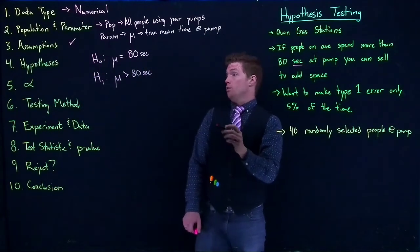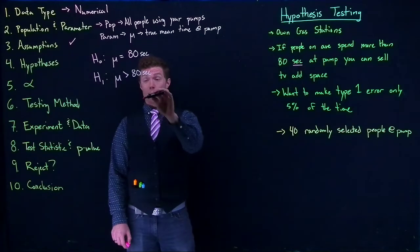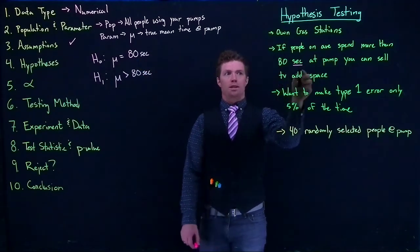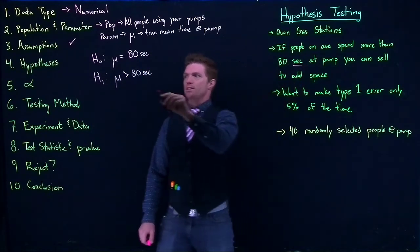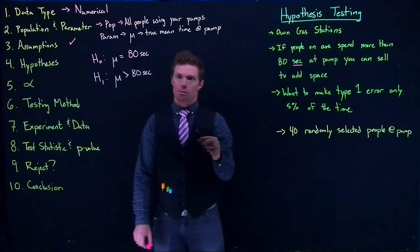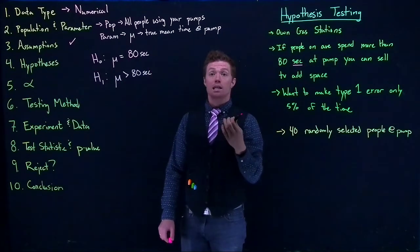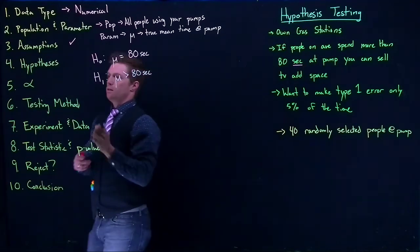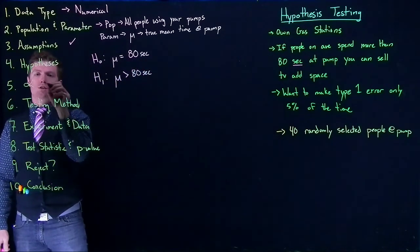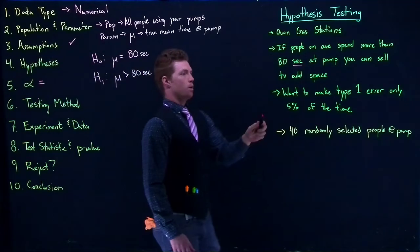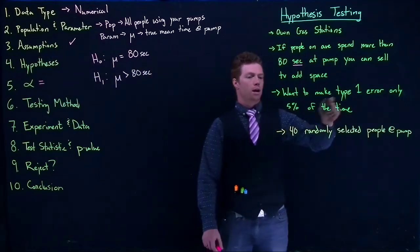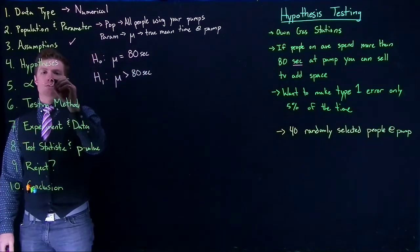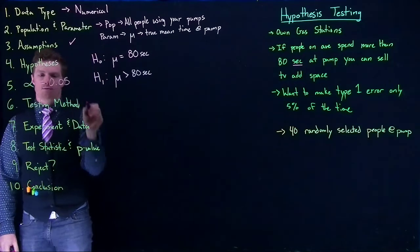Remember, the alternative is whatever we want to be able to claim. If we want to claim it's greater than 80 seconds, the null hypothesis is just that it's equal to 80 seconds. Our alpha was given in the problem — we want to make a Type 1 error only 5% of the time, so alpha equals 0.05.